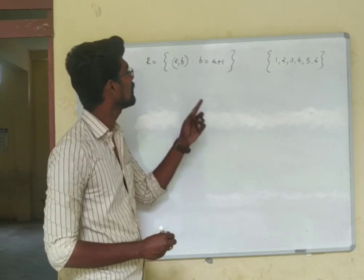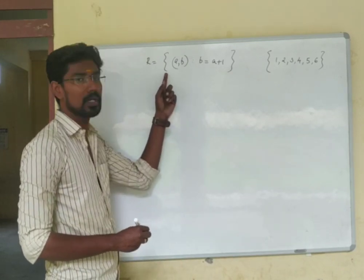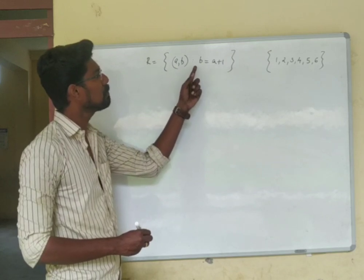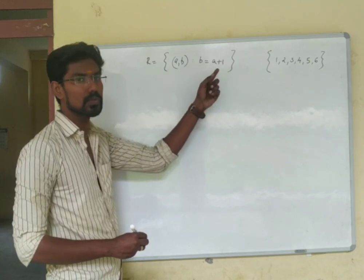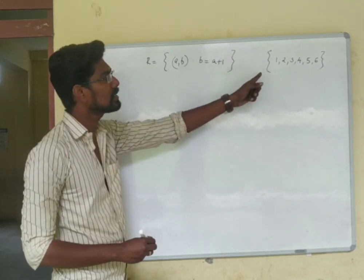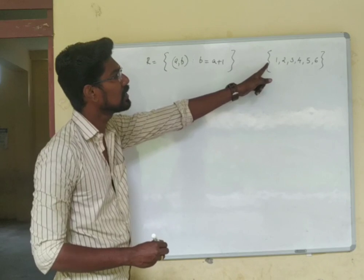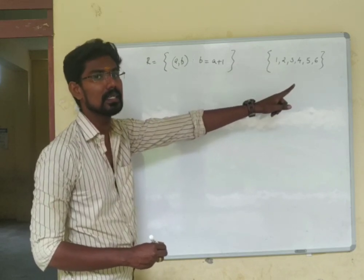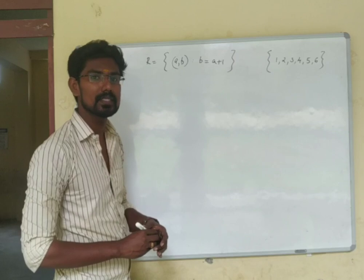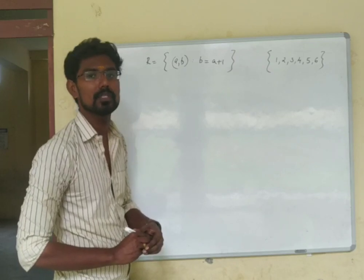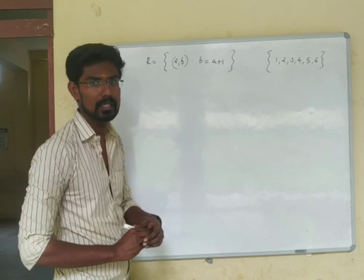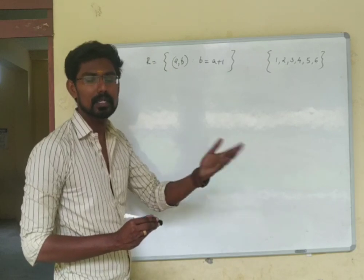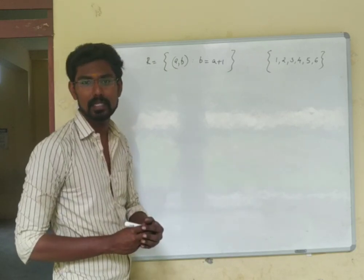Next, consider the relation R defined as the set of all ordered pairs (A, B) such that B equals A plus 1, in the set {1, 2, 3, 4, 5, 6}. Let's check whether this is an equivalence relation by checking reflexive, symmetric, and transitive conditions.